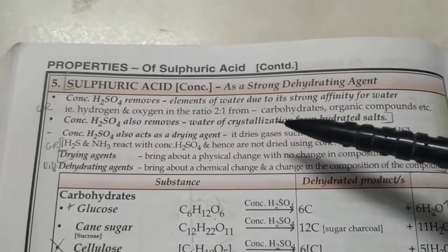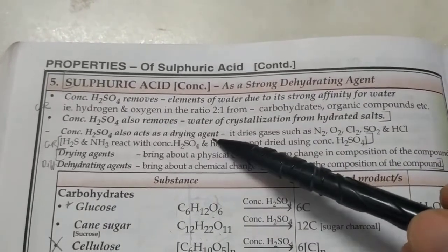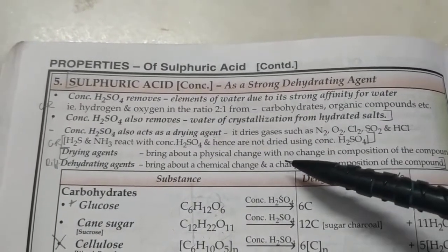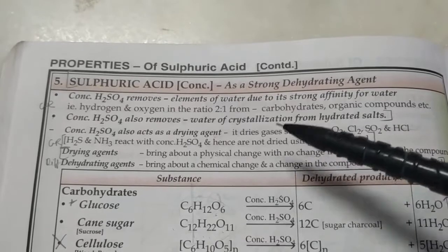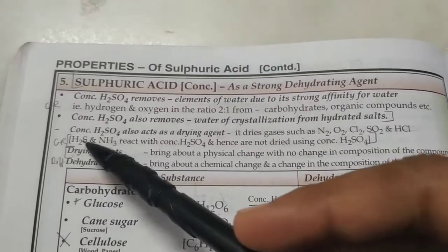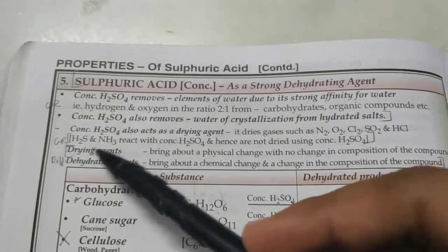Because it is hygroscopic, it can be used as a drying agent to dry certain gases and remove all the moisture from them. You can't use it to dry gases like hydrogen sulfide or ammonia because they will react with sulfuric acid.